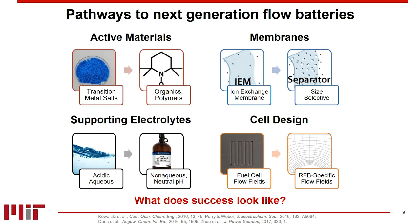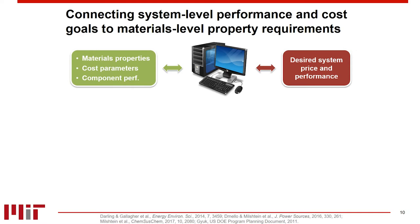The idea of techno-economic modeling is to connect a system-level performance goal to some desired set of materials-level properties. Typically, if I know my desired system price — for example, the DOE's $150 per kilowatt hour target — can I do the inverse problem and back-calculate what sets of materials properties I would need, what cost parameters I would need, and what component performances I would need? This gives me a design space for which I can then begin to look at what chemistries might meet these goals.